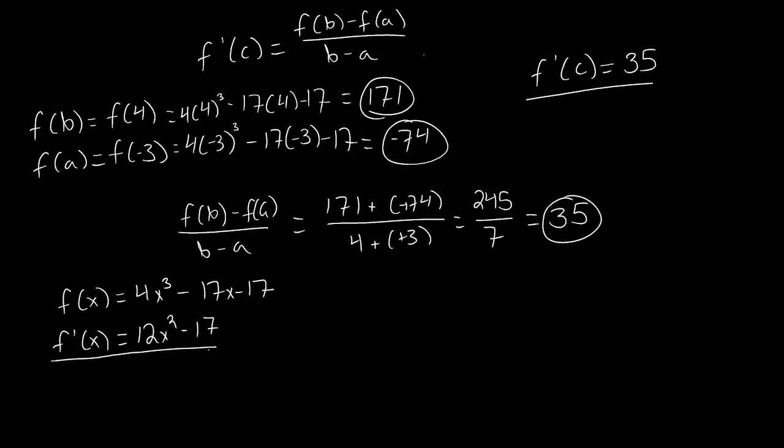But now what we're looking for is we want to try to figure out a way to relate these two statements. Since we're looking for a value that makes our derivative equal to 35 and x is representing some arbitrary value, let's rewrite f'(x) as f'(c). So we would get 12c² - 17. And so now that we have f'(c), we want this to equal 35.